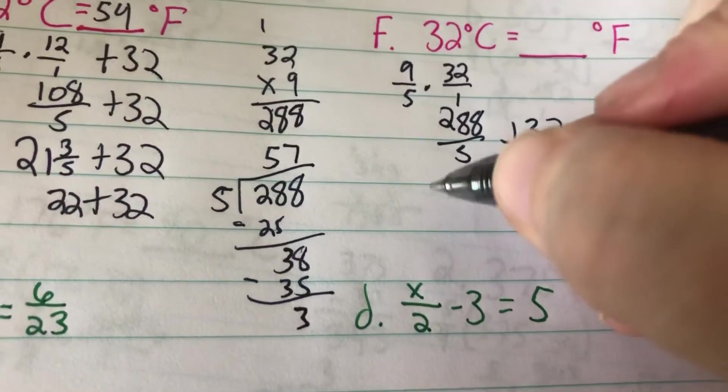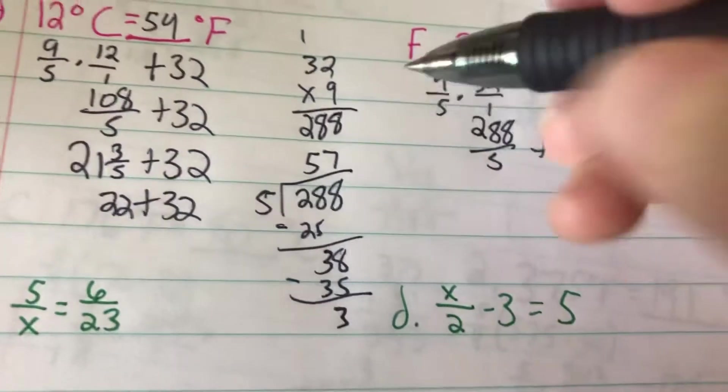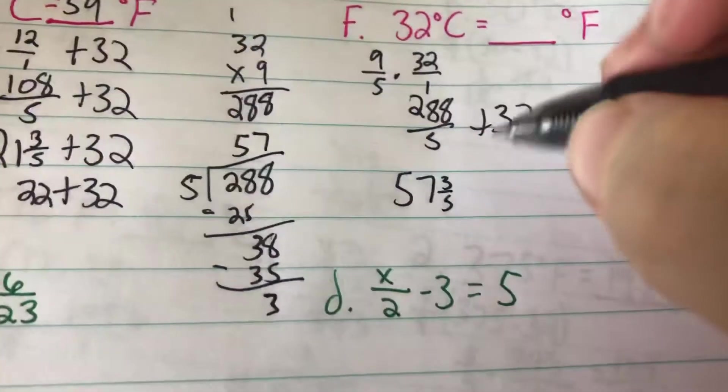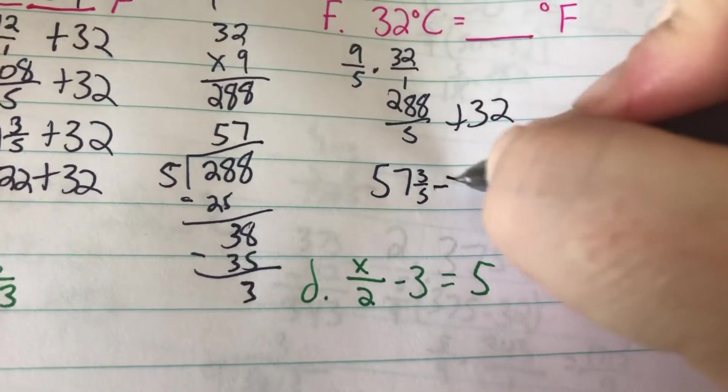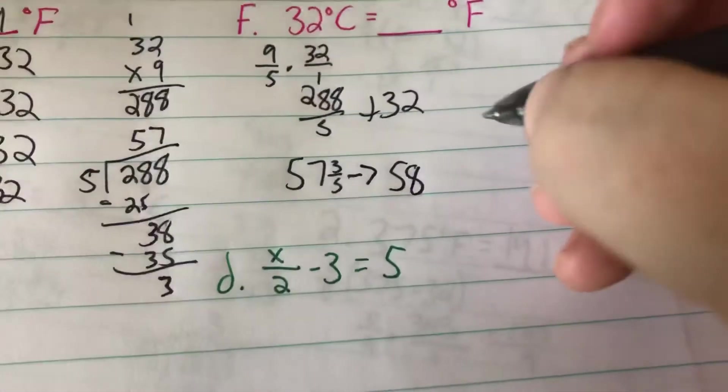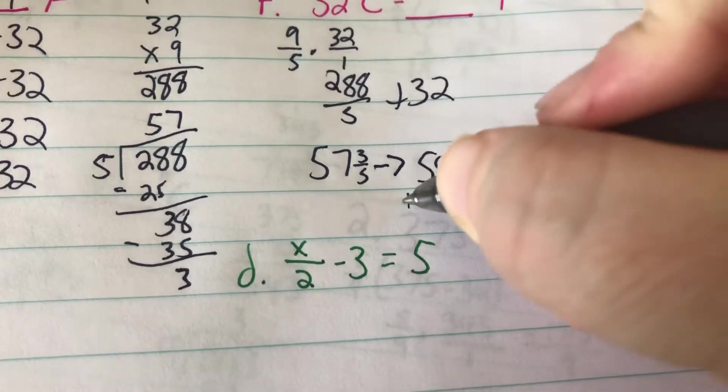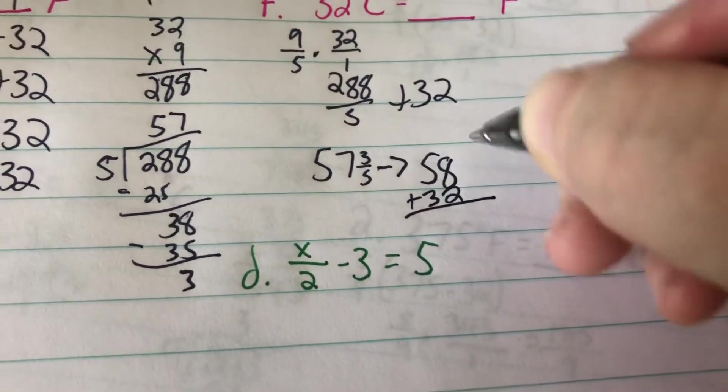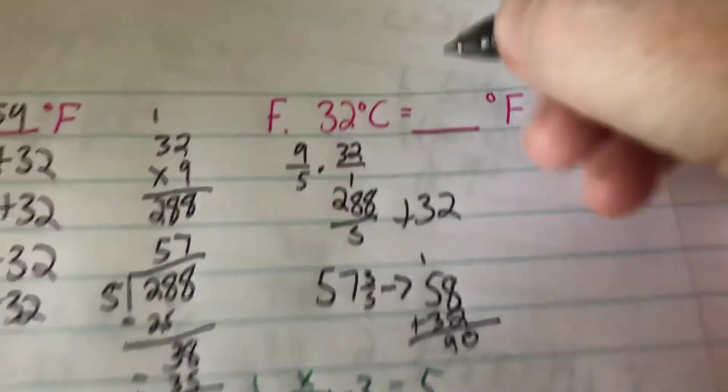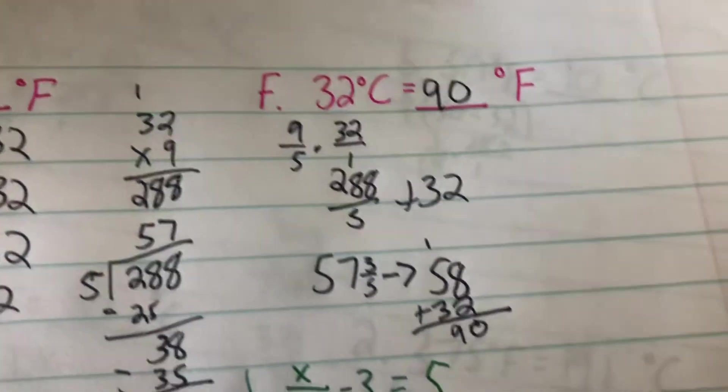So it's going to be 57 and 3/5, which is going to become 58 if I round it. 58 plus 32, 0, 1, 8, 9, it is going to be 90 degrees Fahrenheit.